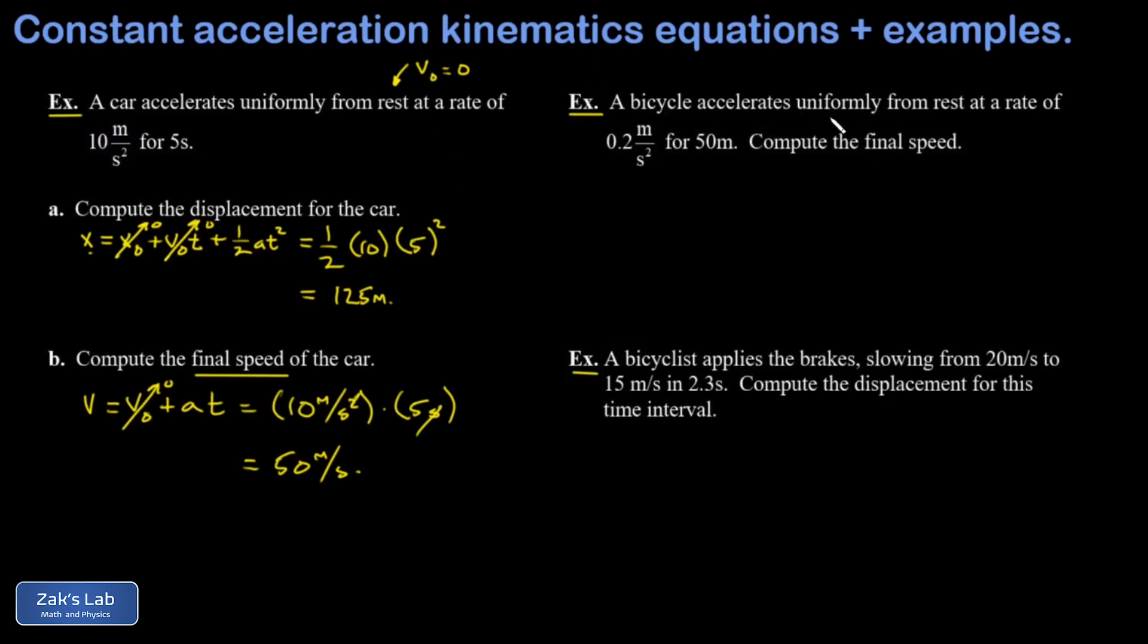Next, we have a bicycle accelerating uniformly from rest at a rate of 0.2 meters per second squared for 50 meters. We have a known acceleration constant, fortunately, for a known distance. And I'm asked for the final speed. And so for this one, it's useful to use the equation that doesn't refer to time because we don't know the time. And that's that third equation we derived. It's very worthwhile to memorize that one. And what we're after here is the final speed v. And we know it started from rest.